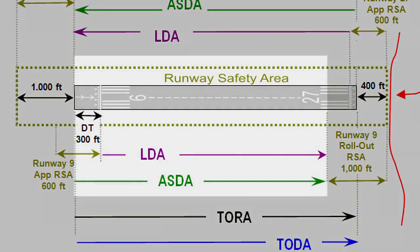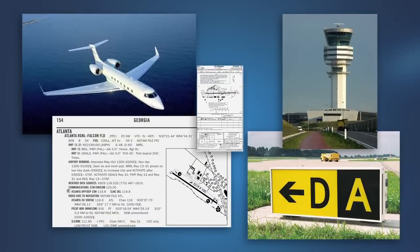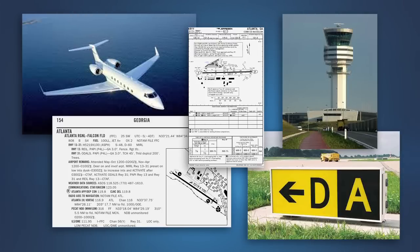Likewise, the accelerate stop distance available for runway 9 must be used when showing compliance with the accelerate stop distance requirements of the airplane operating rules and/or airplane's operating limitations. The accelerate stop distance available is less than the physical length of the runway due to subtractions necessary to achieve the full runway safety area requirement. However, in the event of an aborted takeoff, it is permissible for the airplane to roll beyond the unmarked end of the accelerate stop distance available as it is brought to a full stop on the remaining usable runway. In summary, it is perfectly acceptable to operate on any portion of a runway that is appropriately marked as usable runway regardless of a runway's declared distances. These declared distances are for calculation of performance limits only.